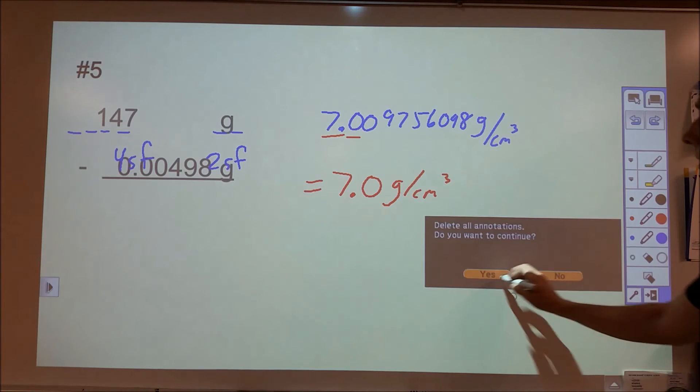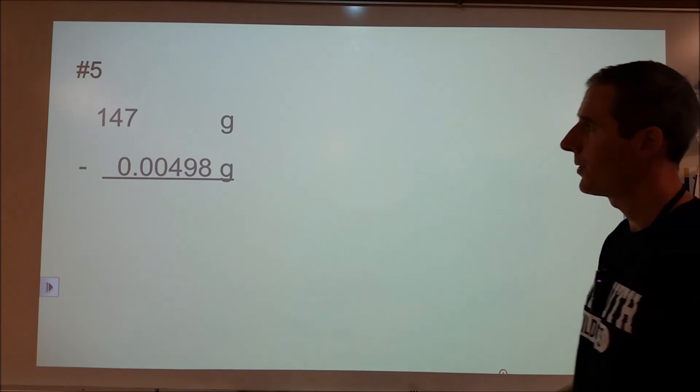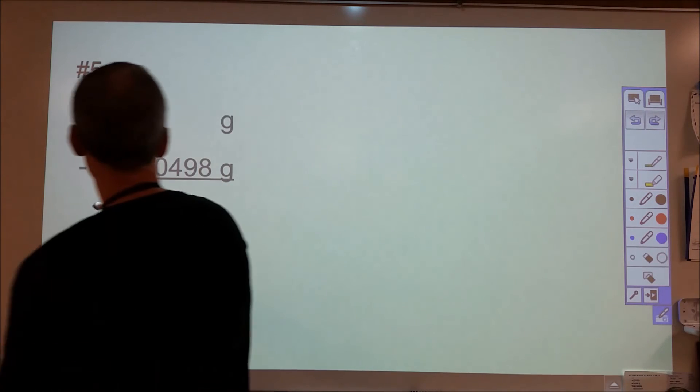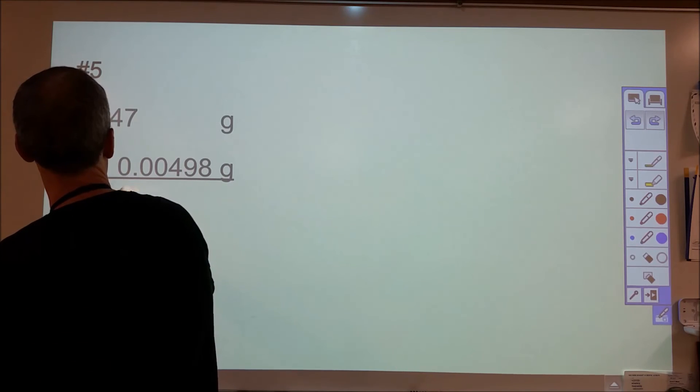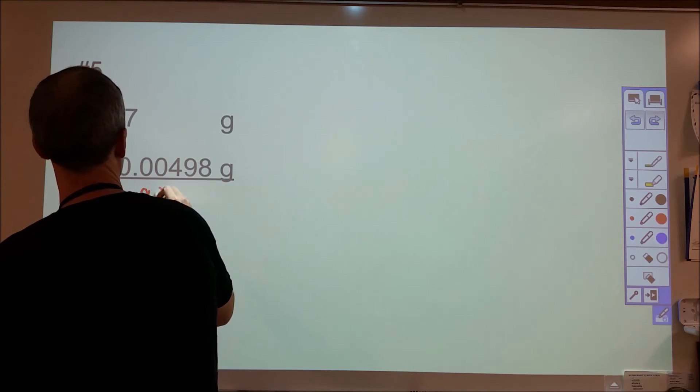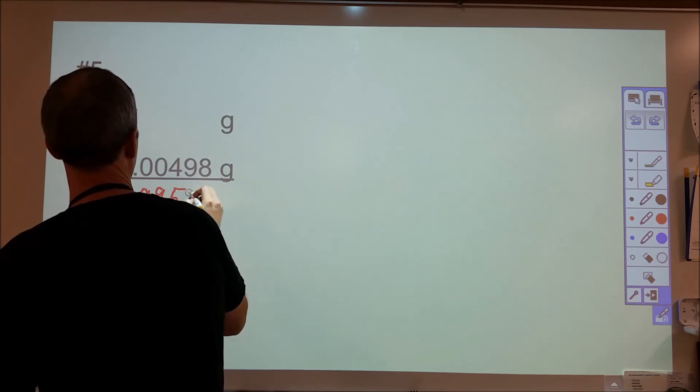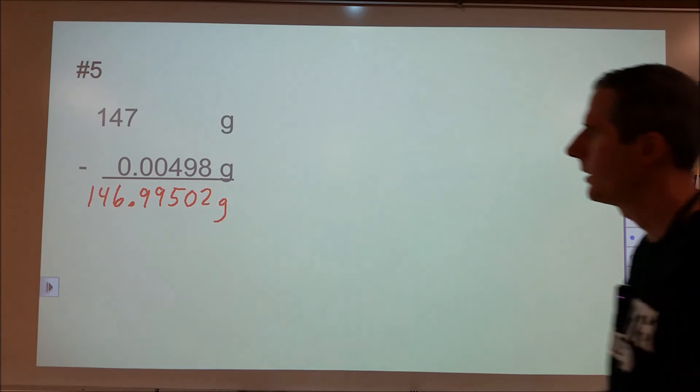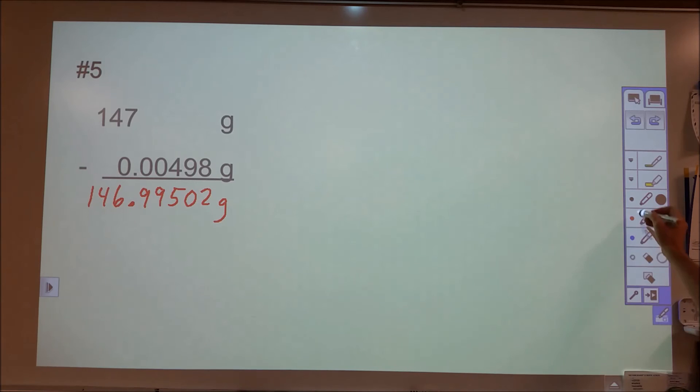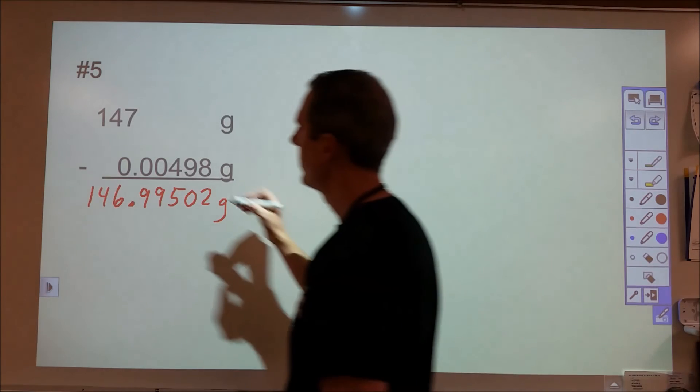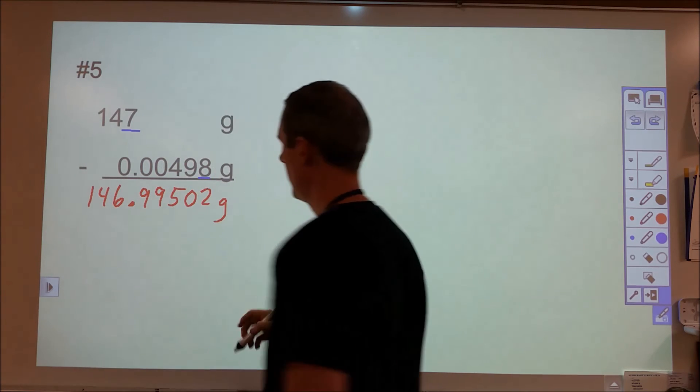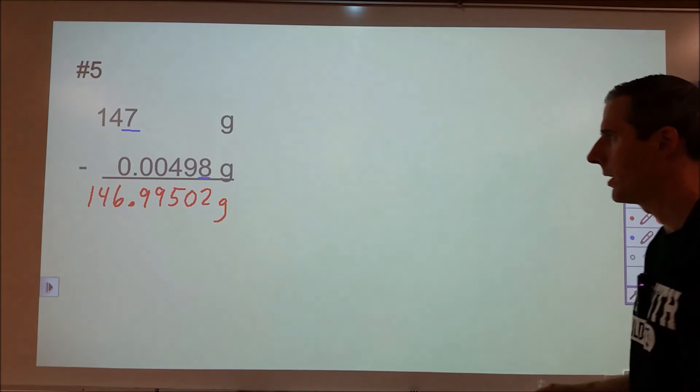And we have one more of a subtraction here, 147 grams minus 0.00498 grams. So we're going to end up here with 146.99502 grams. And for the rounding, we need to look at place. So this is good to the ones place. This is good to the tens, hundreds, thousands, ten thousands, hundred thousandths place. So very precise measurement there by decimal place.